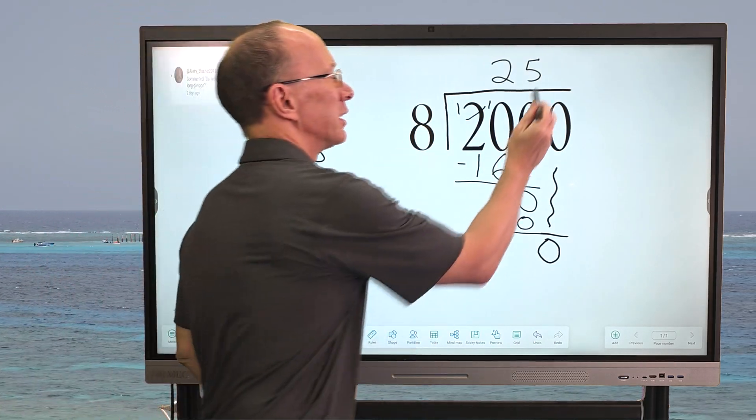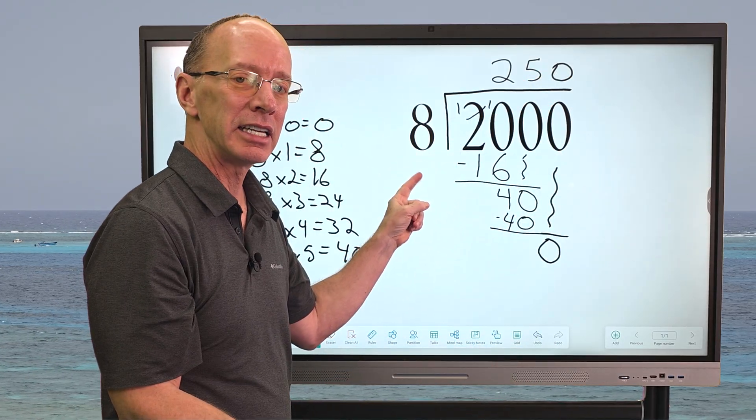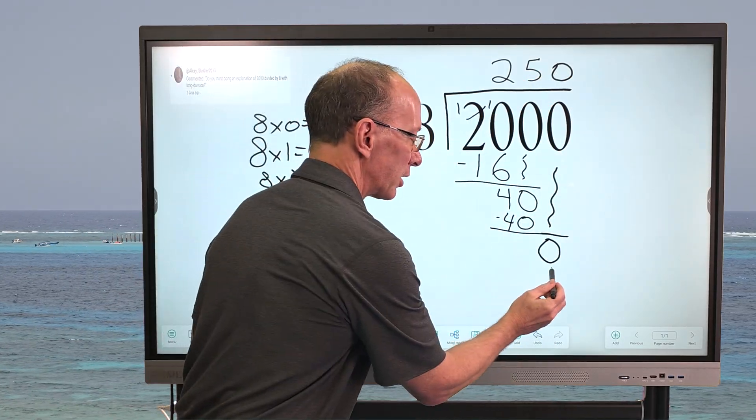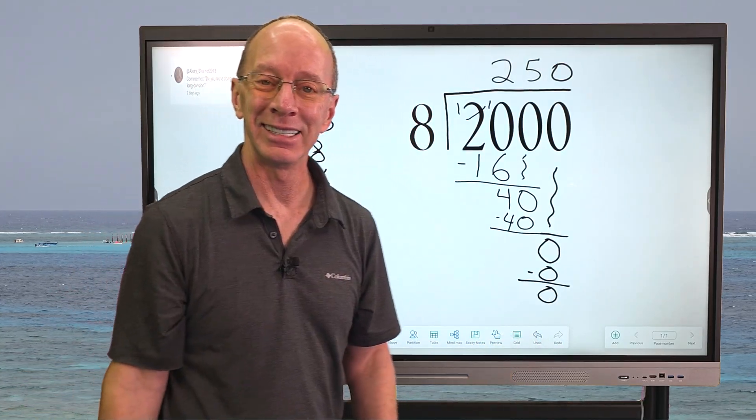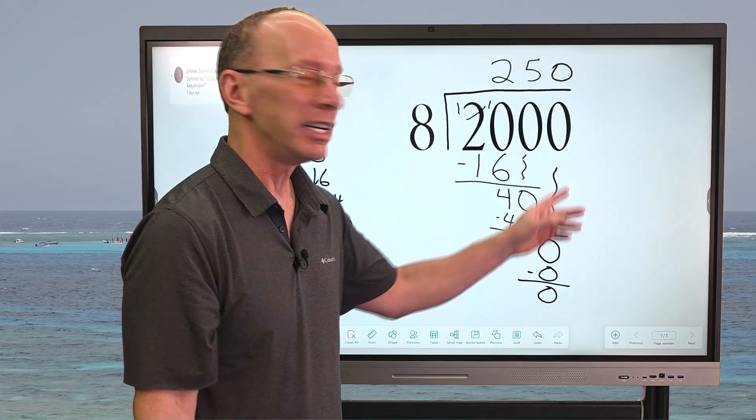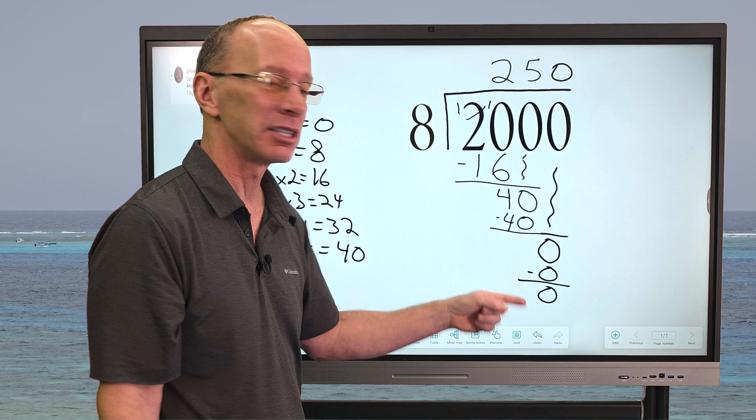So I'm going to go ahead and put zero right here. Now zero times 8 equals zero. I'm going to go ahead and subtract. And zero minus zero is zero. Is there any other numbers to bring down? No, there isn't.